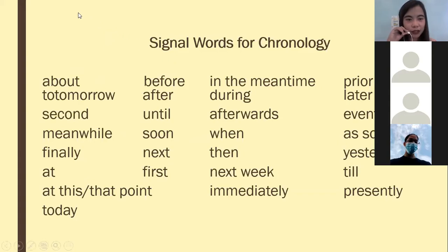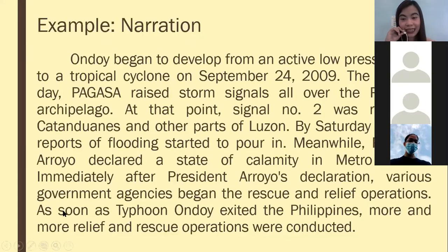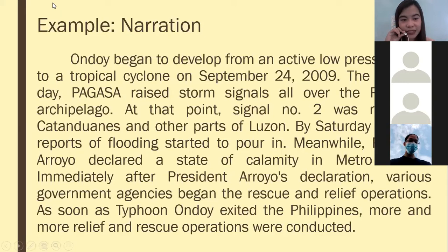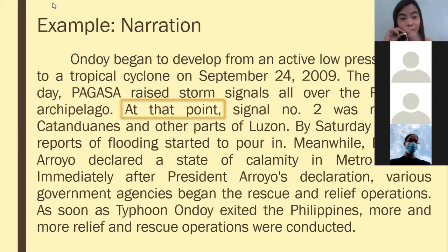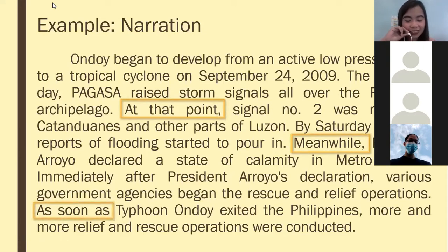The signal words for chronology or procedure include 'tomorrow,' 'second,' 'meanwhile,' and many more. For narration, the signal words used in the sample are 'at that point,' 'meanwhile,' and 'as soon as' — these connect two events like conjunctions.